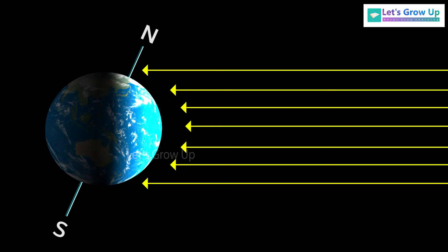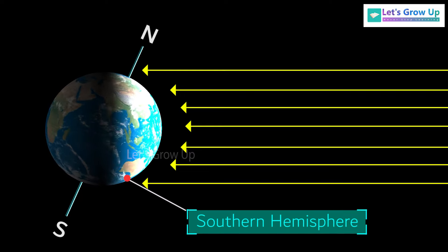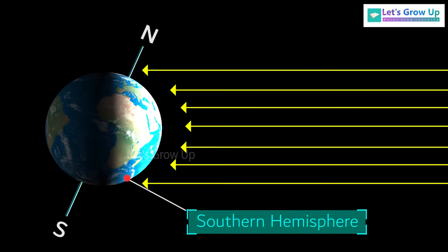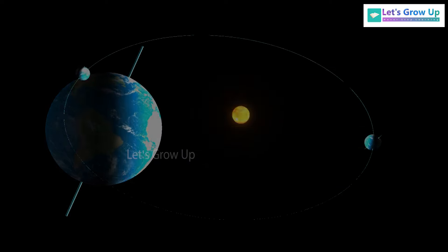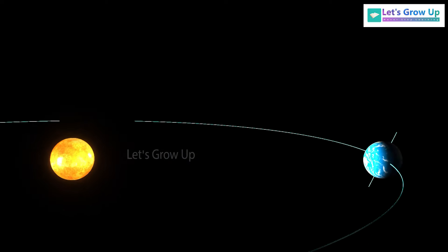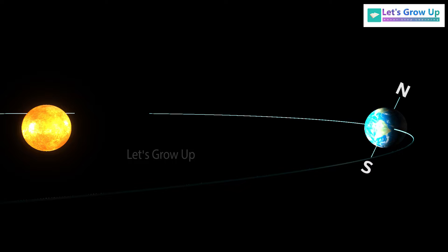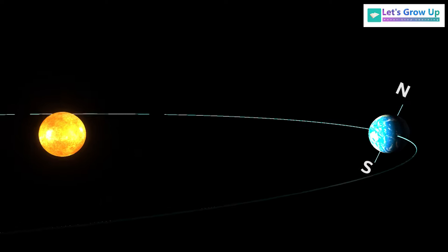At the same time, the southern hemisphere gets less light, so winter occurs there. Similarly, when the southern hemisphere is tilted toward the sun, people in that part of the world experience summer. But then, the northern hemisphere experiences winter. This is the reason for season changes on the Earth.